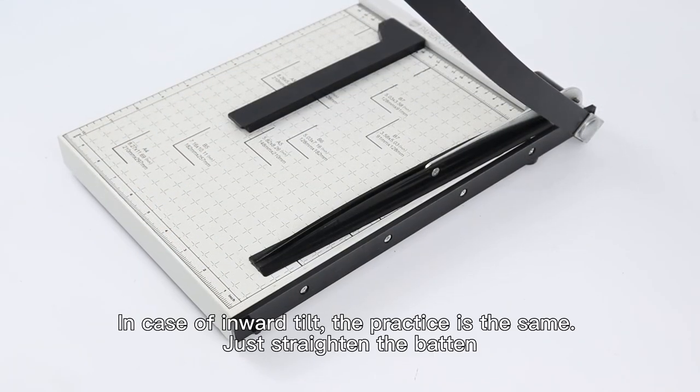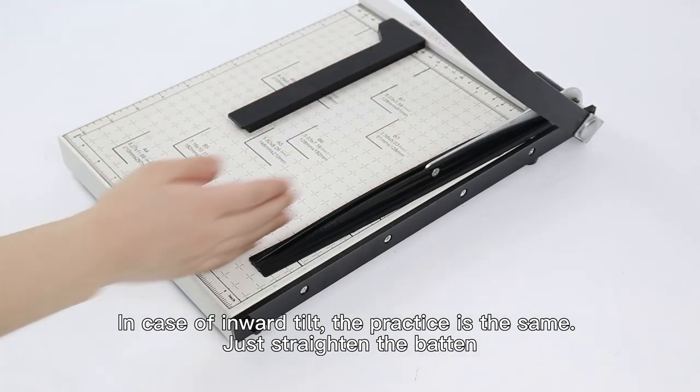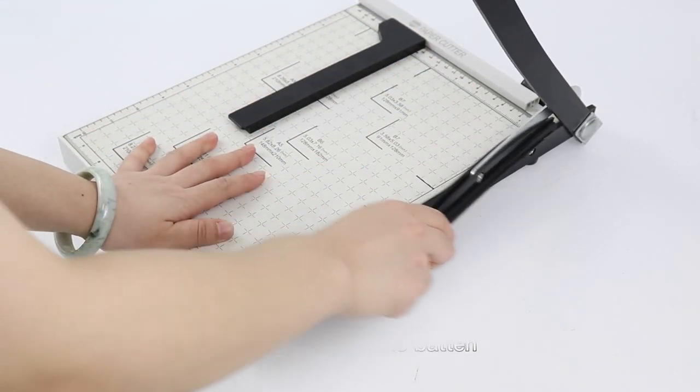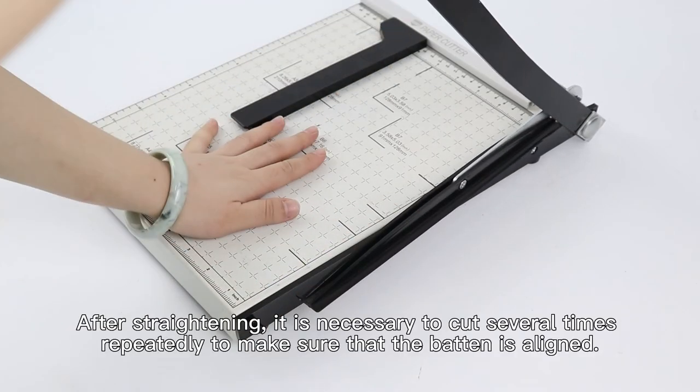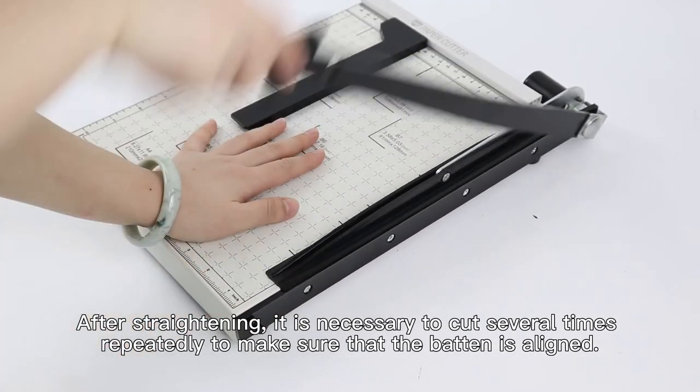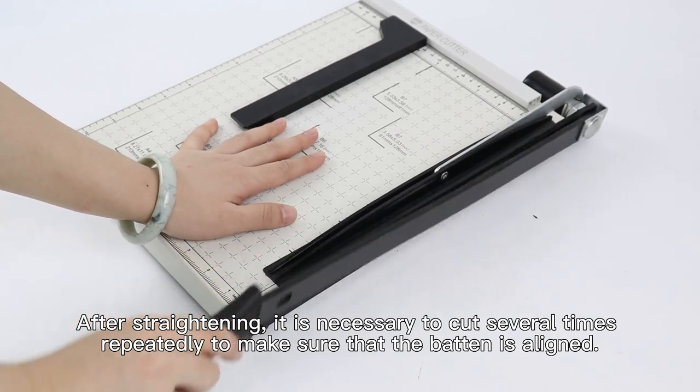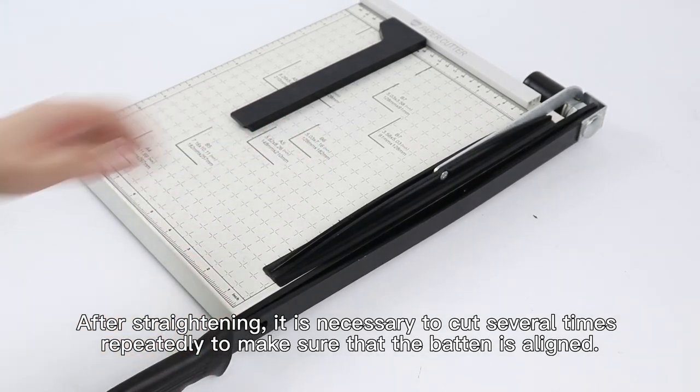In case of inward tilt, the practice is the same. Just straighten the baton. After straightening, it is necessary to cut several times repeatedly to make sure that the baton is aligned.